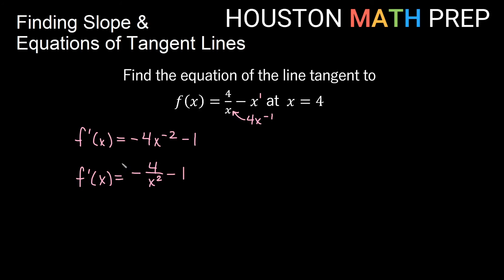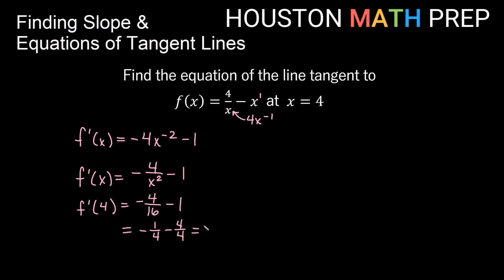Now we find the slope at x = 4. f'(4) = negative 4 over 4 squared, which is 16, minus 1. That simplifies to negative 1/4. Creating a common denominator, 1 = 4/4, so we get a slope of negative 5/4.